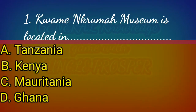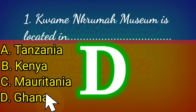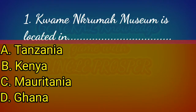Question one: Kwame Nkrumah's museum is located in (a) Tanzania, (b) Kenya, (c) Mauritania, (d) Ghana. The correct answer is Ghana. Kwame Nkrumah's museum was built in memory of the great president in Accra, Ghana, and it was built to honor him for his fight for the independence of Ghana.